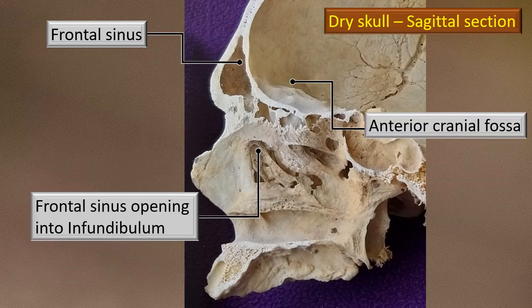In this more detailed sagittal section, note the frontal sinus location. Immediately behind the posterior wall of the frontal sinus is the anterior cranial fossa — this is very important. The frontal sinus opens into the infundibulum, a funnel-shaped area. Traced downwards, the infundibulum goes in front of and below the ethmoidal bulla, toward the hiatus semilunaris, and ultimately the frontal sinus opens into the middle meatus. There is variability: it may open into anterior ethmoid air cells or even directly into the maxillary sinus.